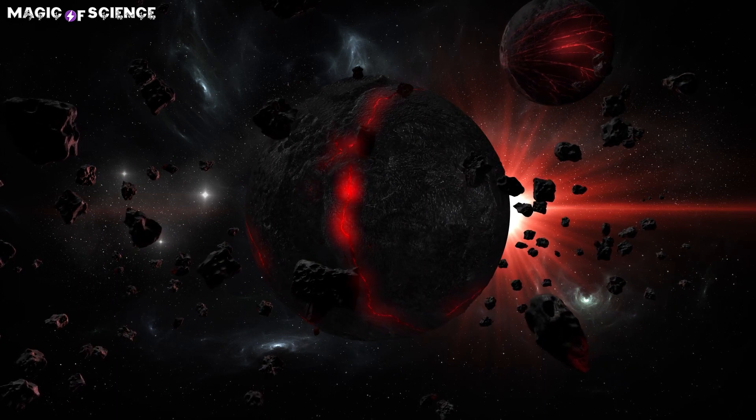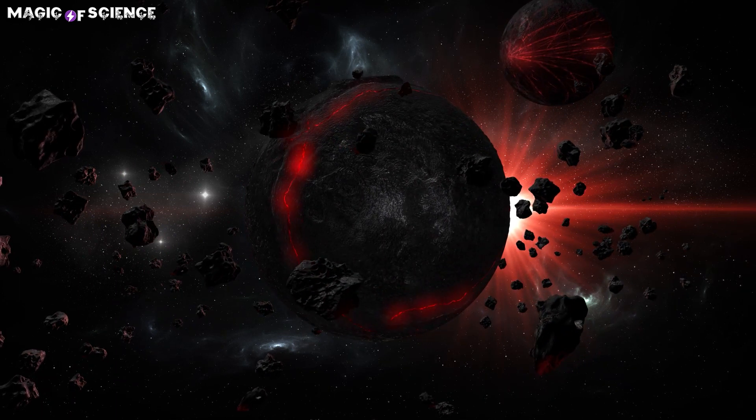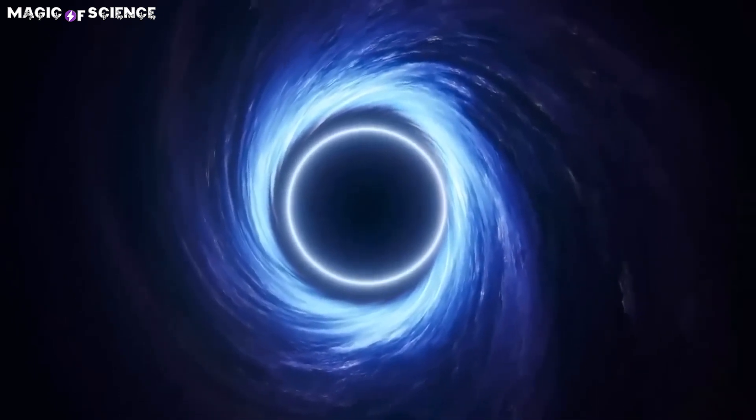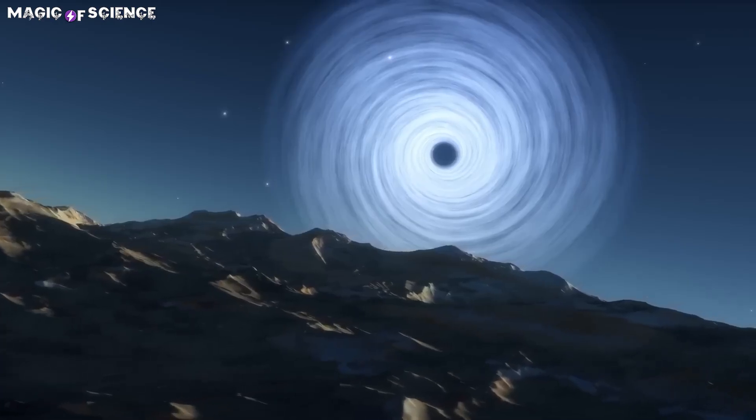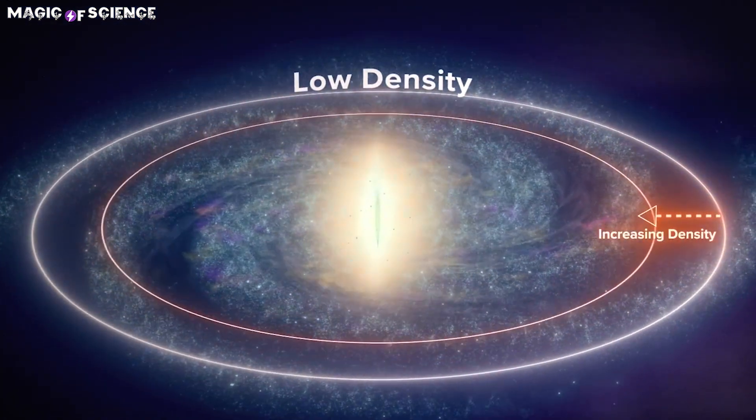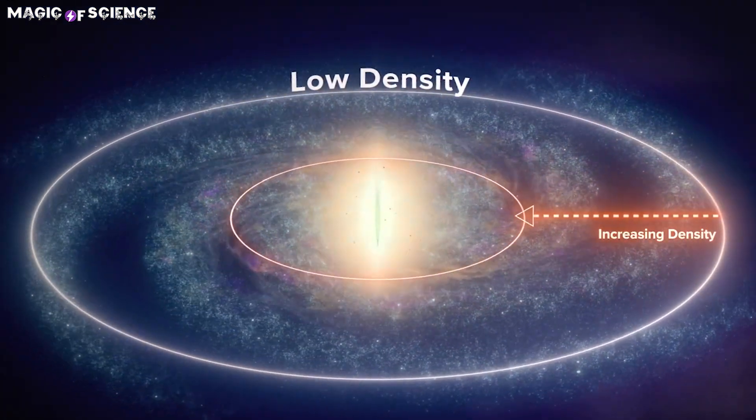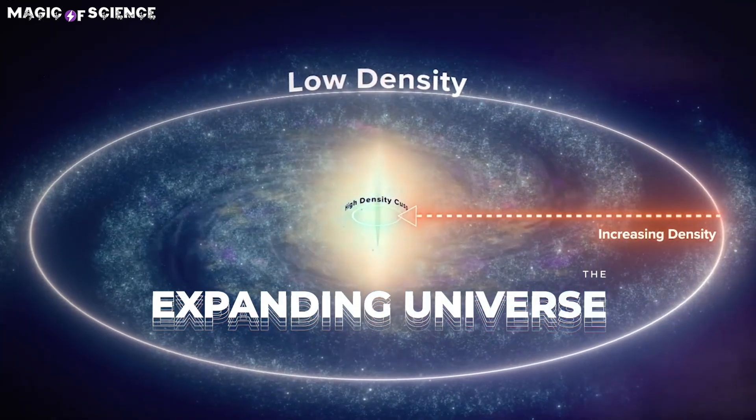Unlike normal matter, dark matter neither emits nor absorbs light, making it challenging to detect directly. Its gravitational pull, though, influences the movement of galaxies and clusters, anchoring them within the expanding universe.